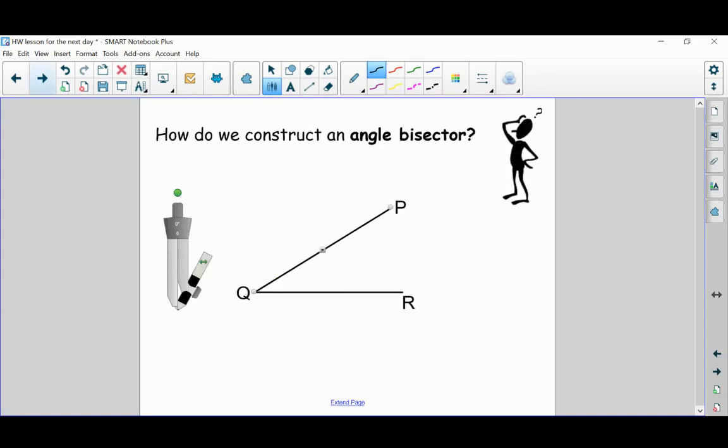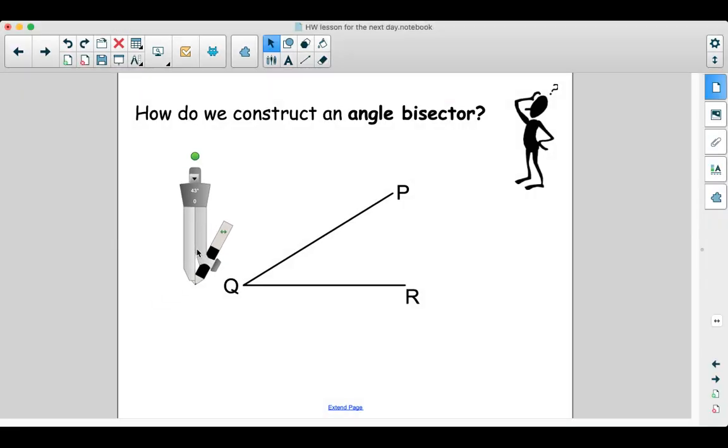Next, we're going to construct an angle bisector by using the compass. Every time you hear the word construct, that means you have to use the compass and straight edge. First, you are going to put the needle on the vertex angle Q. And then open up. I usually open up like about half segment for QR.